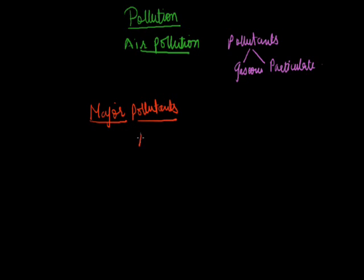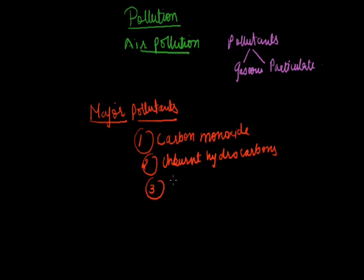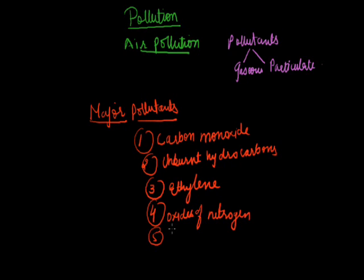the first is carbon monoxide, the second major air pollutant is unburnt hydrocarbons, the third is called ethylene, the fourth most important major pollutant is oxides of nitrogen, they may be nitrogen oxide or nitrogen dioxides, the fifth major pollutant is smoke and the sixth major pollutant is called aerosol or CFCs.